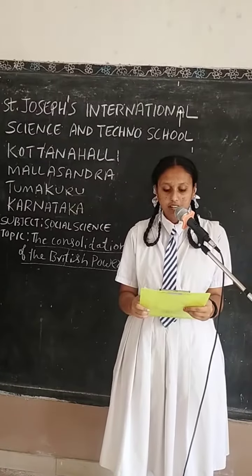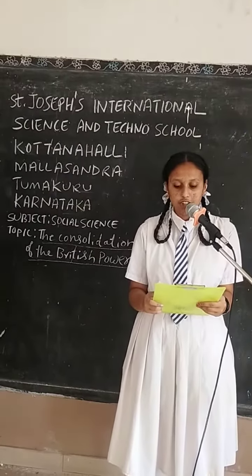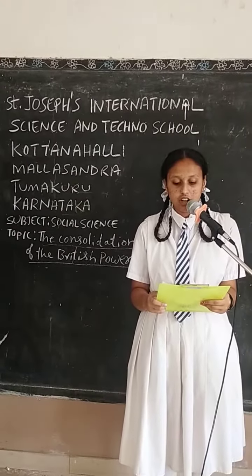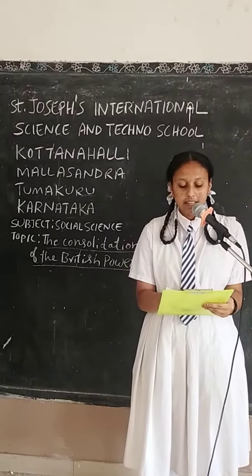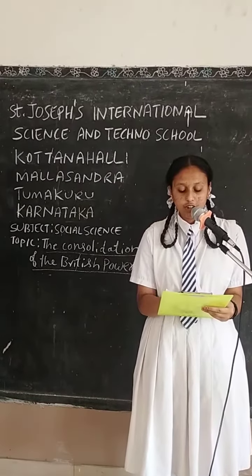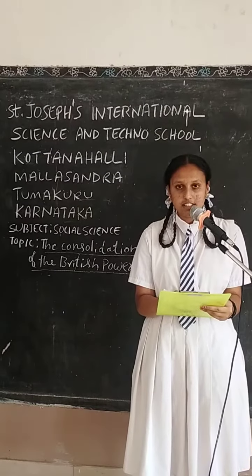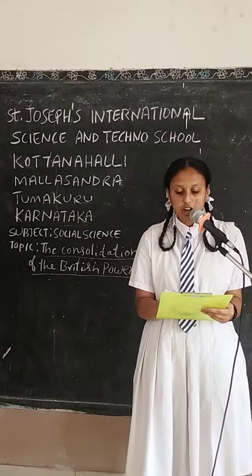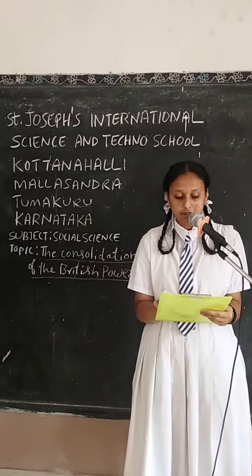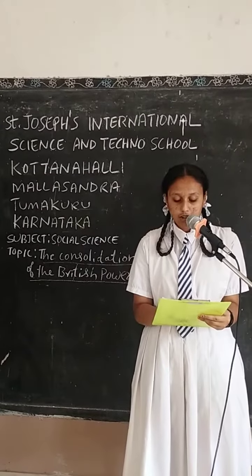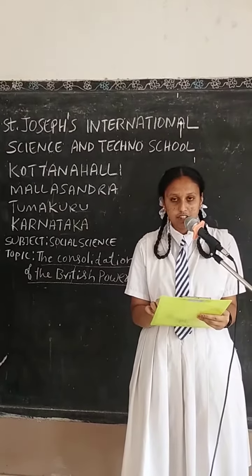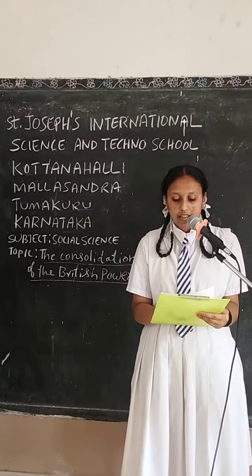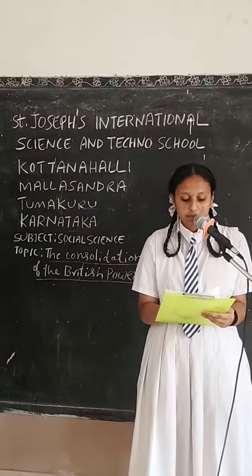Hi friends, today I am going to tell you about the consolidation of the British power. From 1818 to 1857, the entire India came under the rule of the British. They occupied major states like Punjab, Singh, Agar and many other small states.